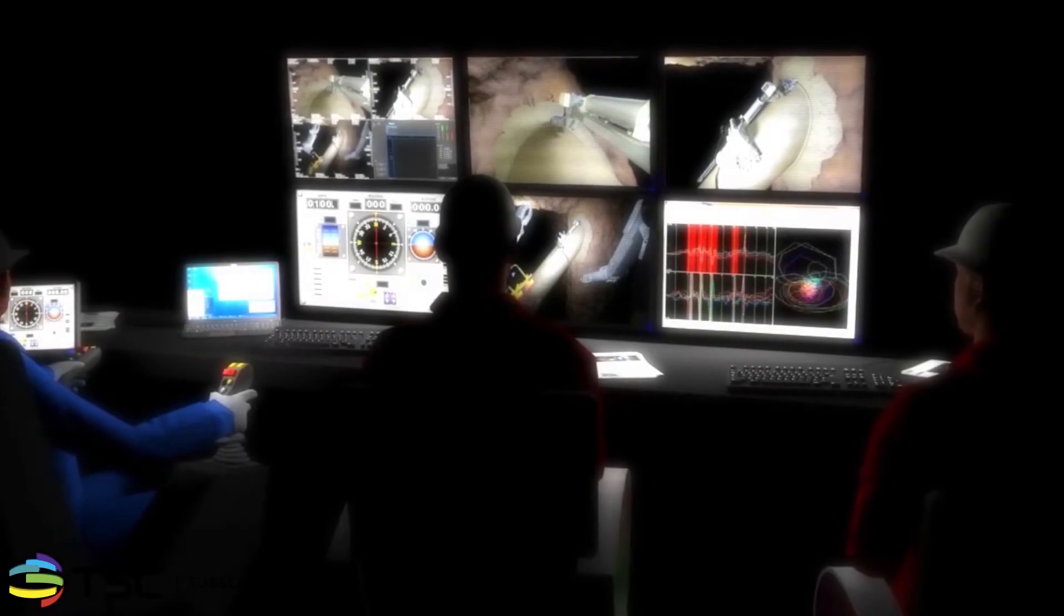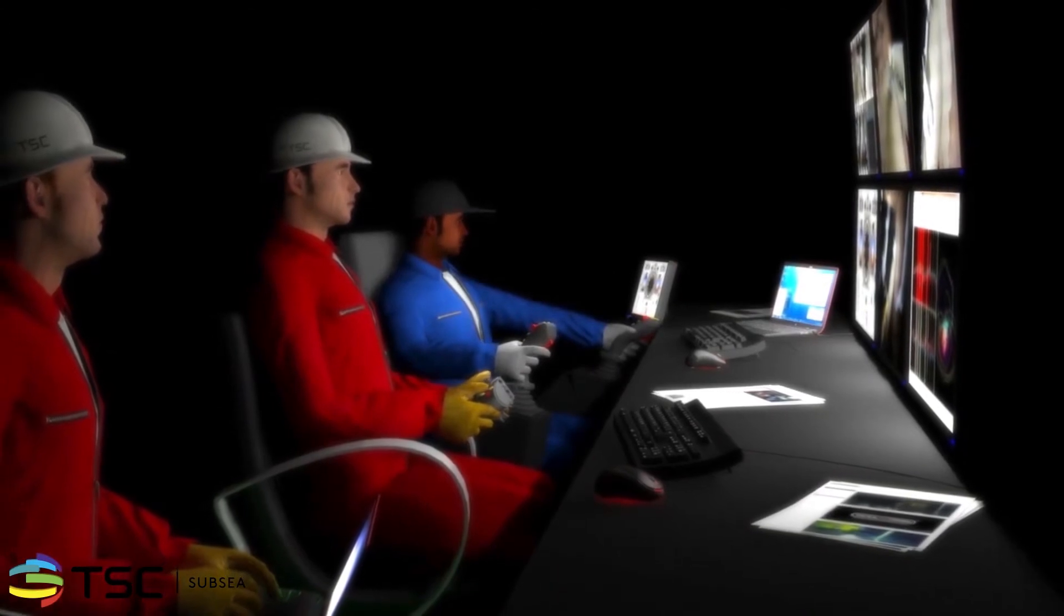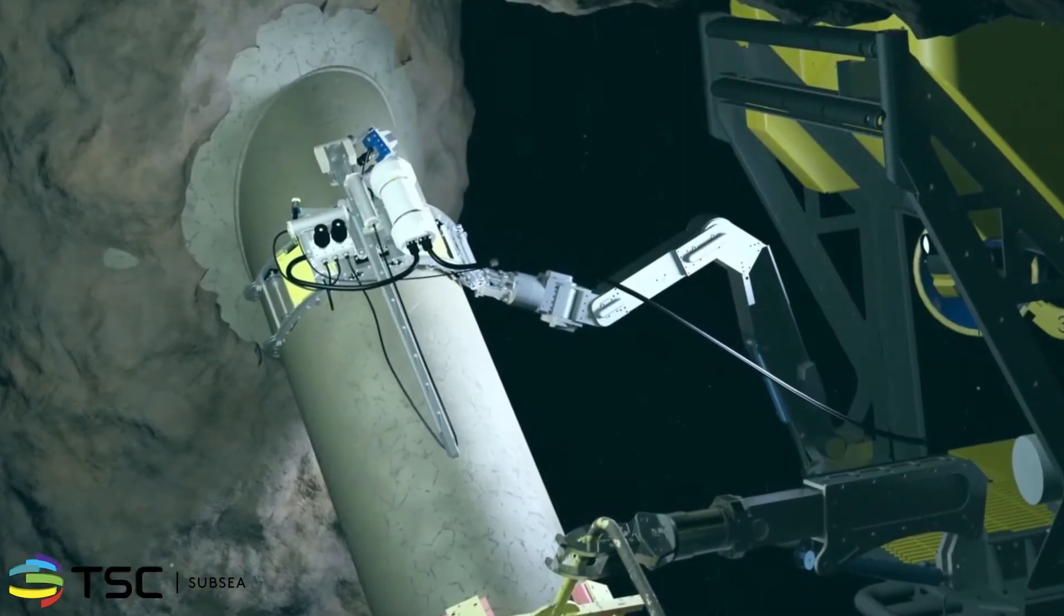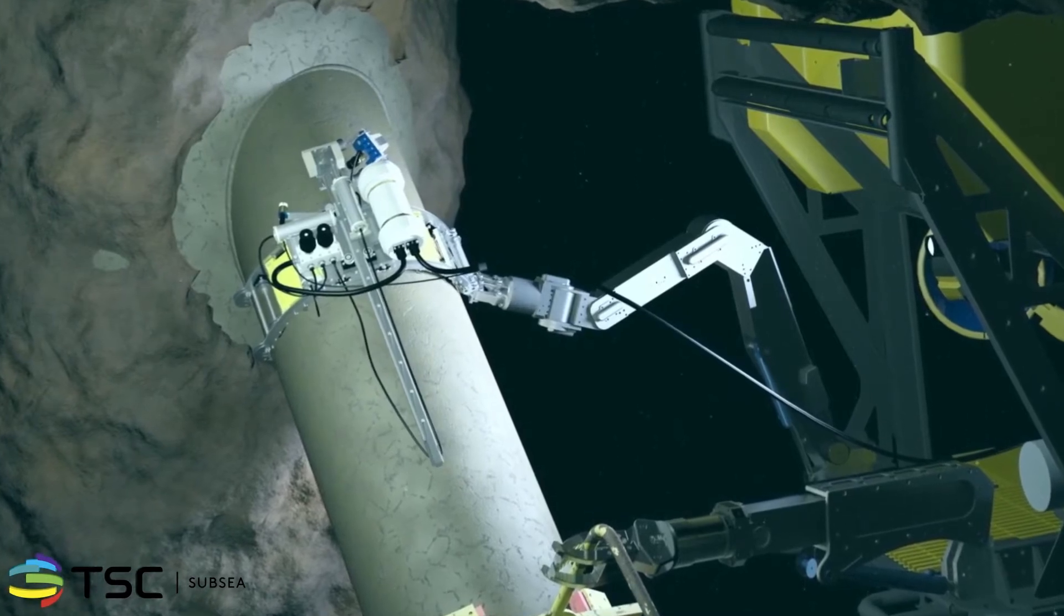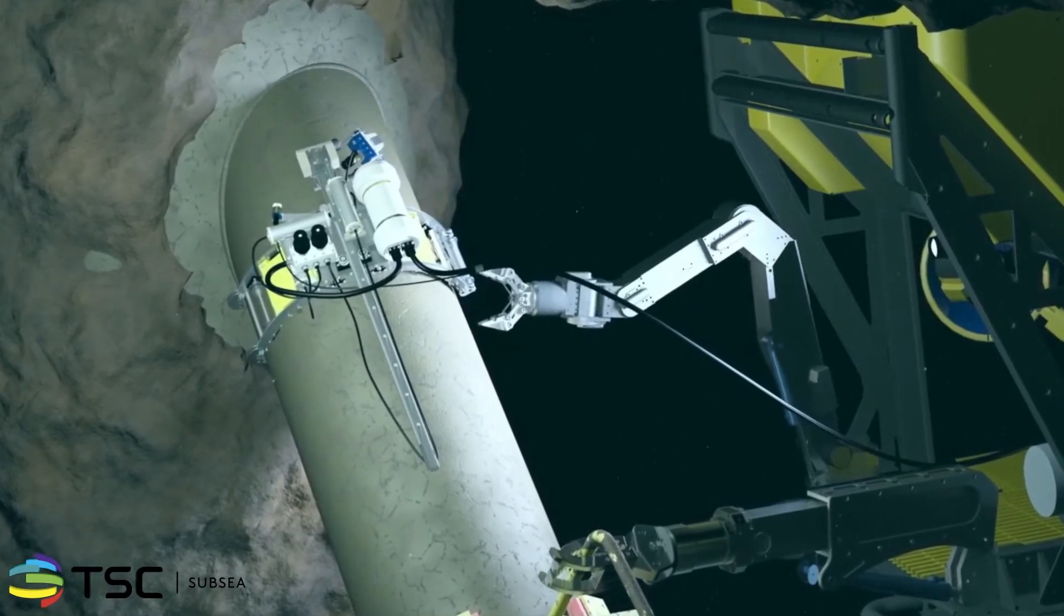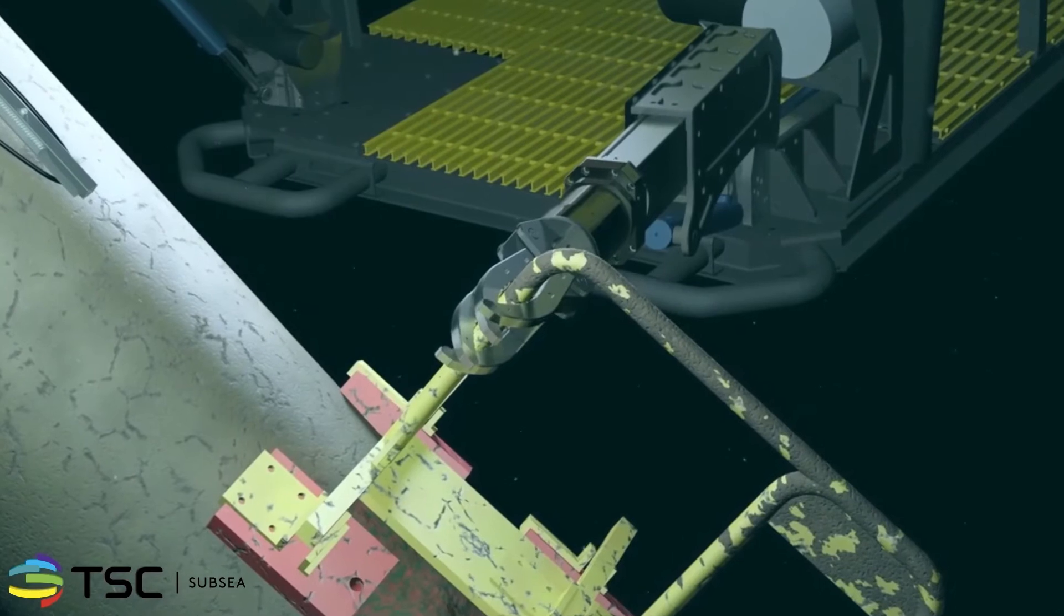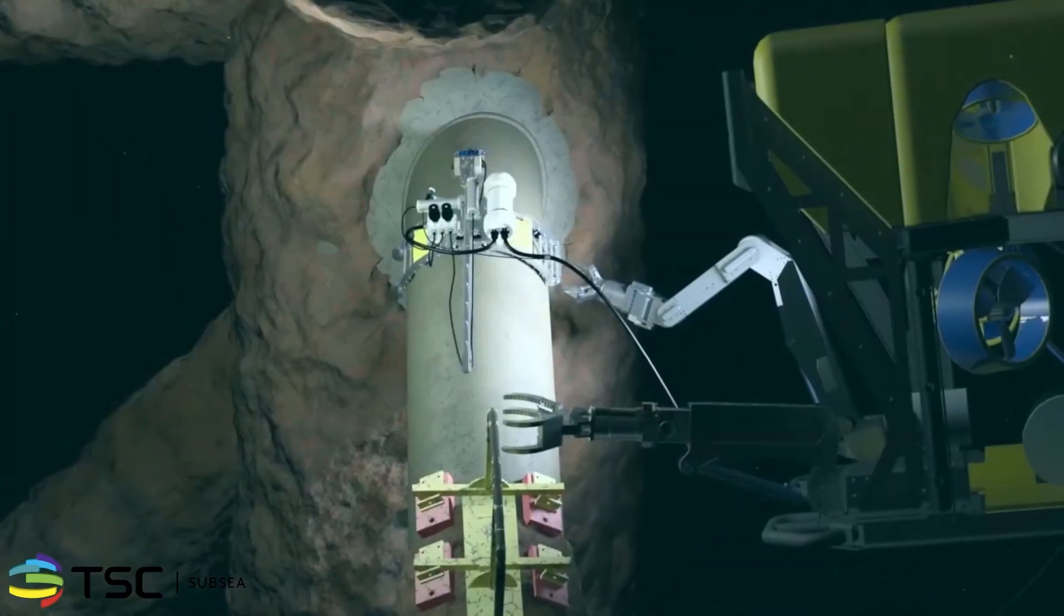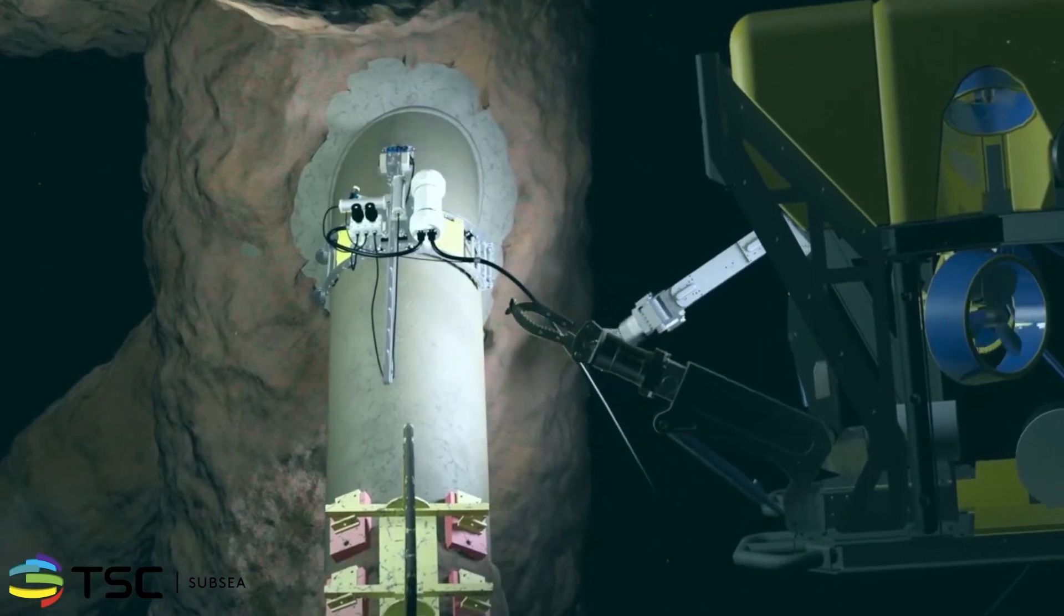Remote deployment requires coordination between the ACFM and ROV operators, both of which can sit side by side in the control room. The ROV places the scanner on the brace to be inspected. Once in place, the stability of the ROV is no longer required. The magnetic clamp is released and the ROV stands back to a monitoring position, allowing the scanner to work independently.